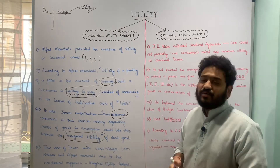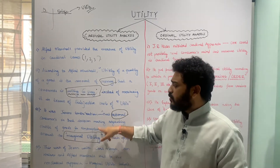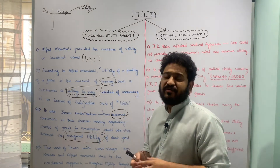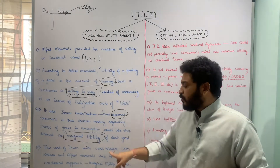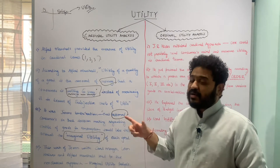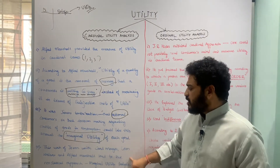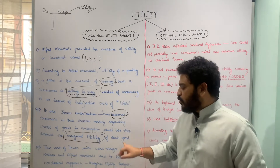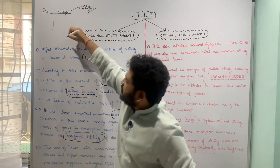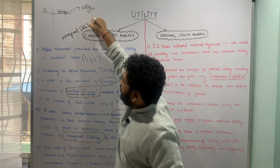I will talk about what marginal utility and total utility mean in the next class. But for now, Jevons's work said that if a consumer has to make choices regarding consumption of certain goods, he or she always takes into account the marginal utility generated from consumption of that particular commodity. On this foundation, it was Carl Menger, Leon Walras, and Alfred Marshall who developed the neoclassical approach of marginal utility or cardinal utility analysis.